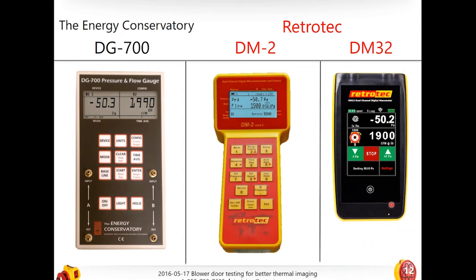A great deal of our discussion is focused on the DM32, which is the most up-to-date, newest, and flagship of all the Retro Tech products — sort of the ring to rule all rings. But that doesn't mean things don't apply to a DM2 or DG700. I will specify when certain subjects or processes are only specific to the DM32.